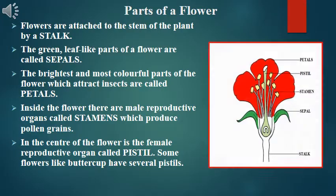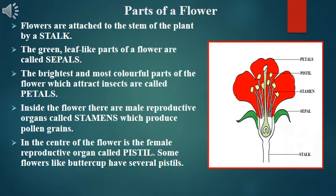Flowers are attached to the stem of the plant by a stalk. The green leaf-like parts of a flower are called sepals. The brightest and most colorful parts of the flower, which attract insects, are called the petals.